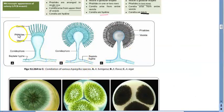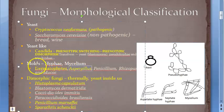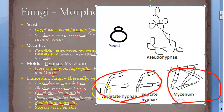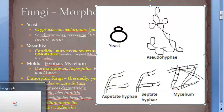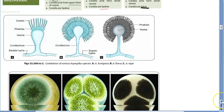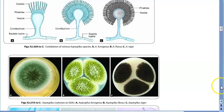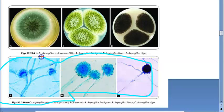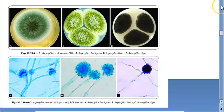Aspergillus belongs to the molds — it has hyphae and mycelium. The species include Fumigatus, Flavus, and Niger — Niger you can remember as black. On Sabouraud dextrose agar, their colony appearances differ. The LPCB (Lactophenol Cotton Blue) stain shows them in blue. This is a recap from microbiology. So in etiology, remember: Aspergillus, Fusarium, and Candida.